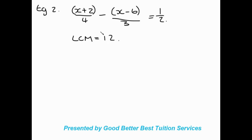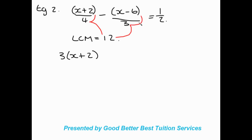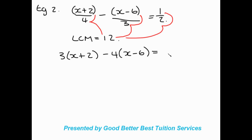Following the same steps: the LCM divides by the denominator, so 12 divided by 4 is 3, and 3 times into the bracket gives us 3(x + 2). Then 12 divided by 3 is 4, and because of the negative sign we write negative 4(x − 6). On the right side, 12 divided by 2 times 1 leaves us with 6.